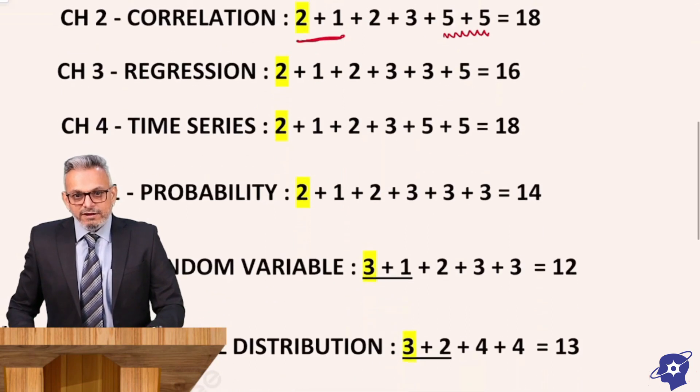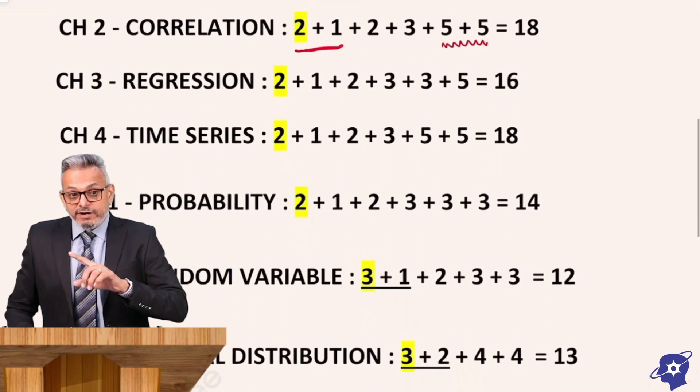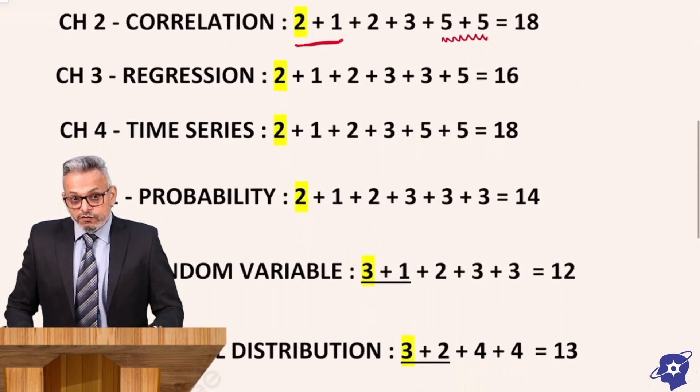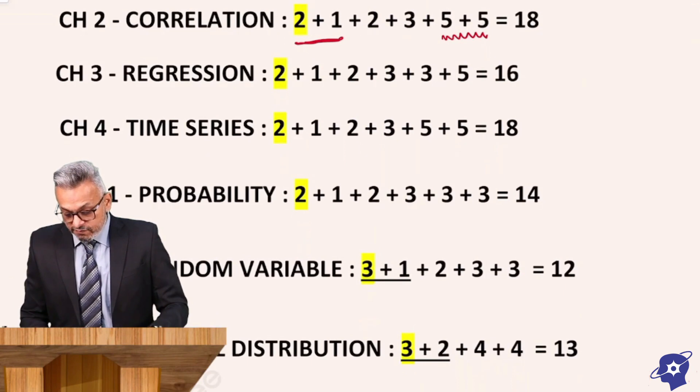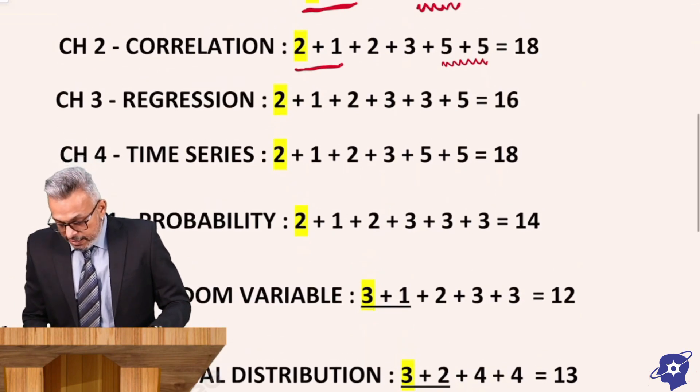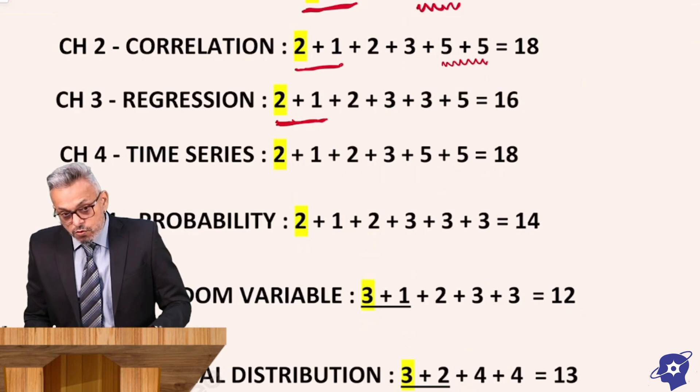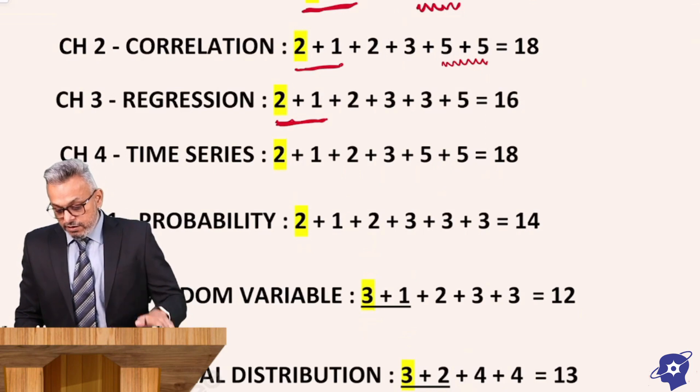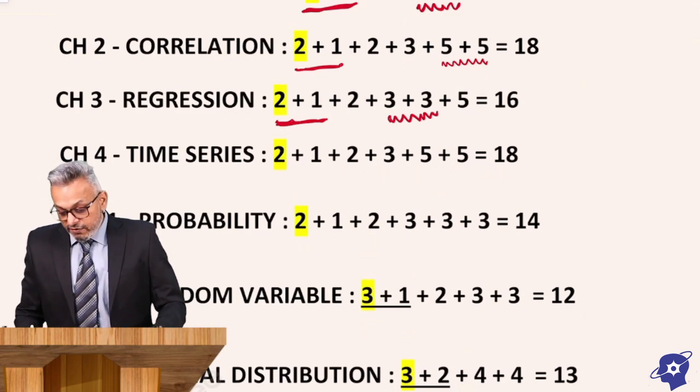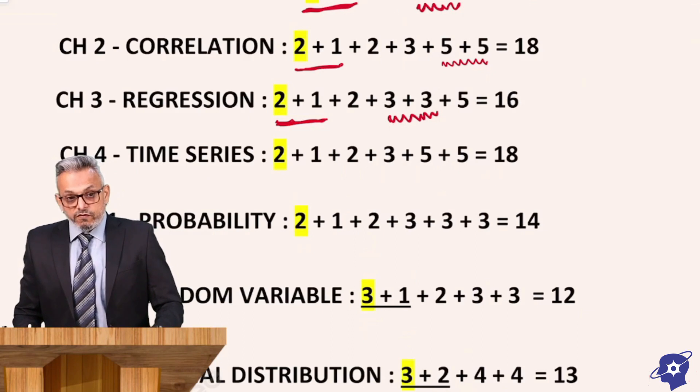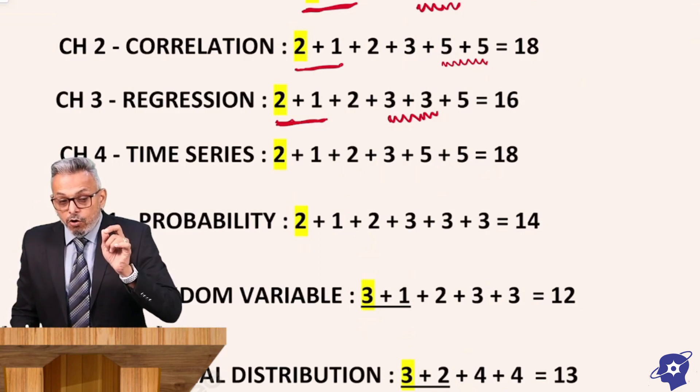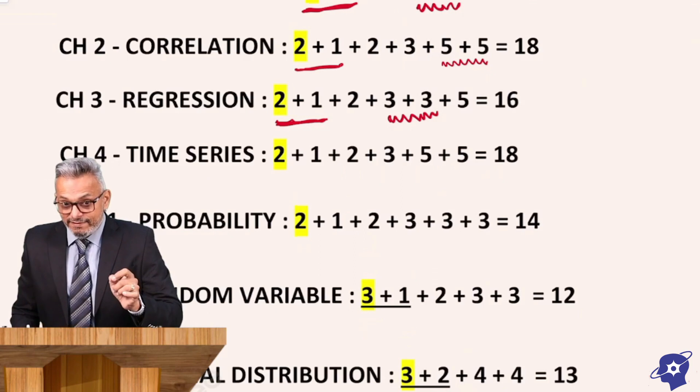Correlation's next stage - correlation is a relation between two variables, but now using the relationship we are going to predict, we are going to forecast, we are going to estimate. For that we have this chapter Regression. In regression, the weightage is different as compared to correlation even though they are connected chapters. Regression again 2 marks plus 1 mark. I will again underline this, I will tell you at the end of the video.